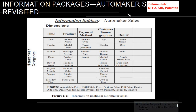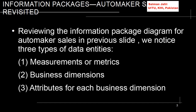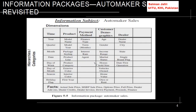Let us now revisit the automaker sales information package that we discussed before, which was basically in chapter 5. So these were the information packages for automaker sales. As we noticed in this information package diagram for automaker sales, we have three types of data entities. First are the measurements or metrics, which are basically the facts: annual sale price, maximum sale price, options price, full price, dealer add-ons, dealer credits, etc.